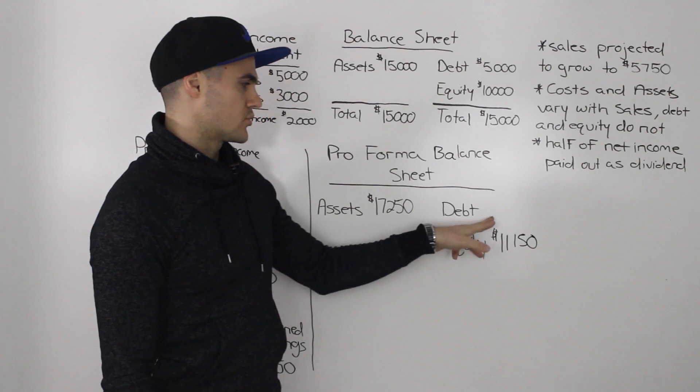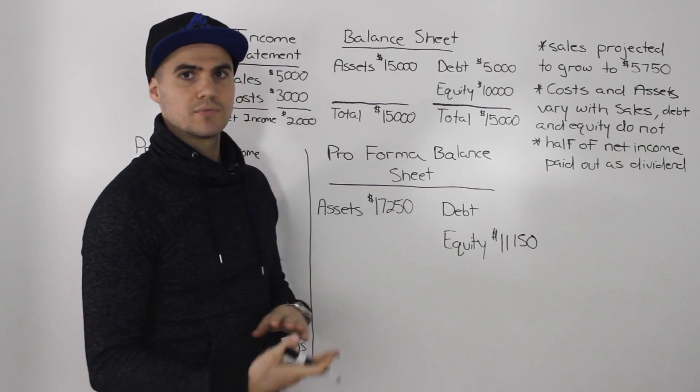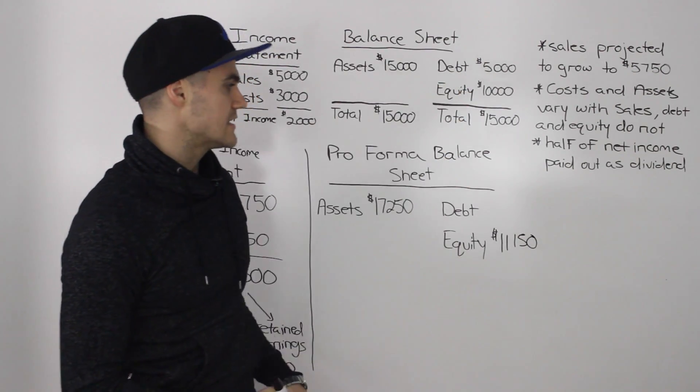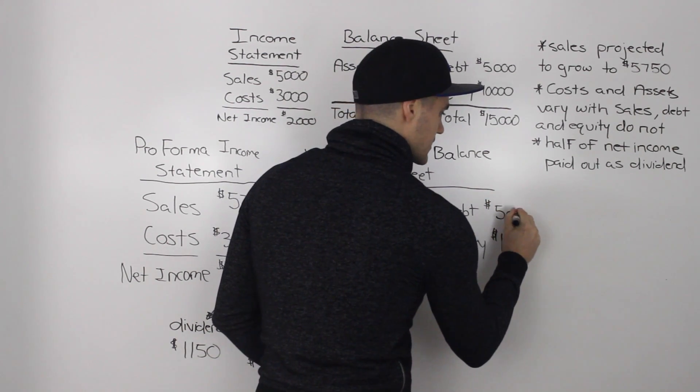Now, what about the debt portion of the balance sheet? Well, for now, let's just assume that we don't take on any additional debt. So let's say that the debt stays the same. So it would stay at $5,000.